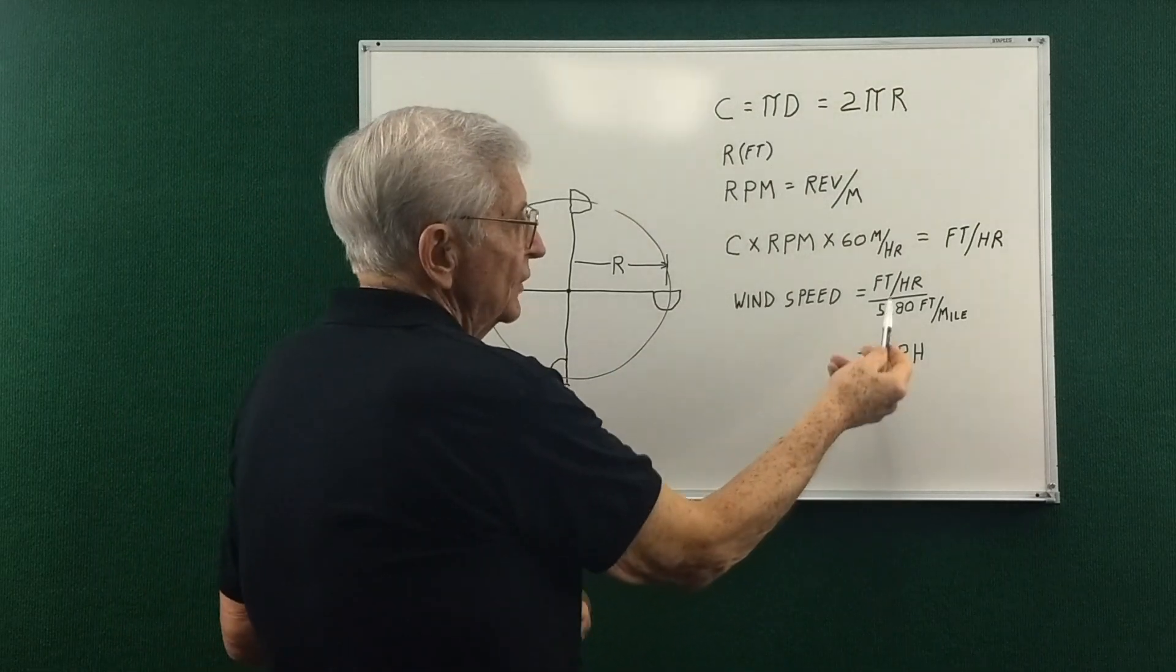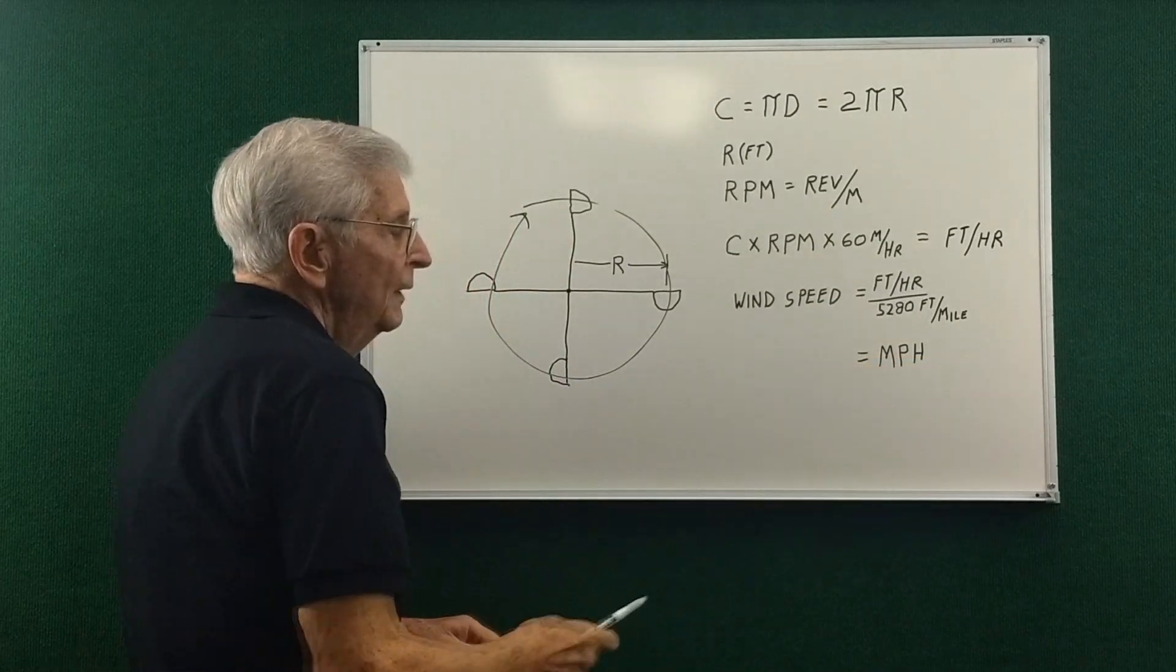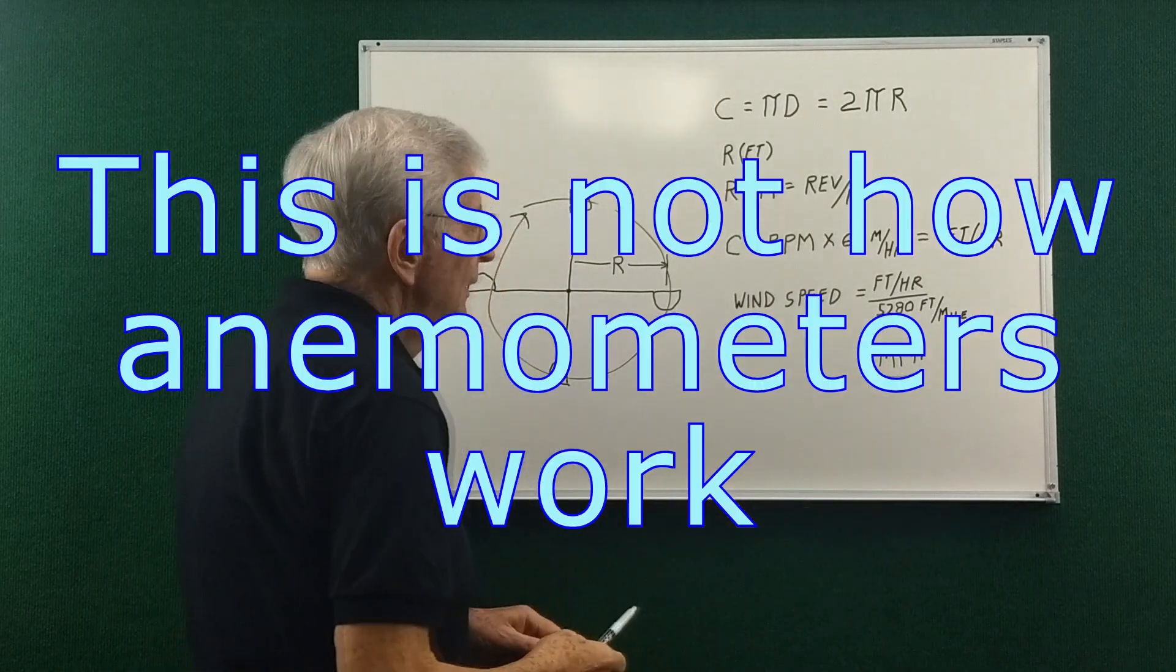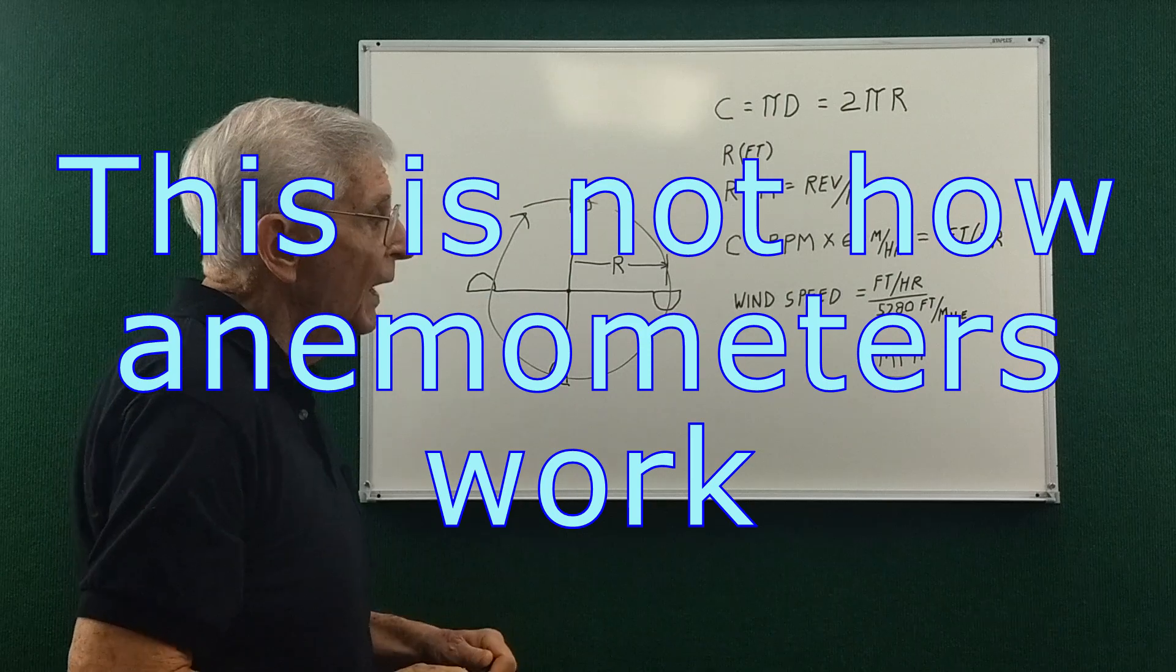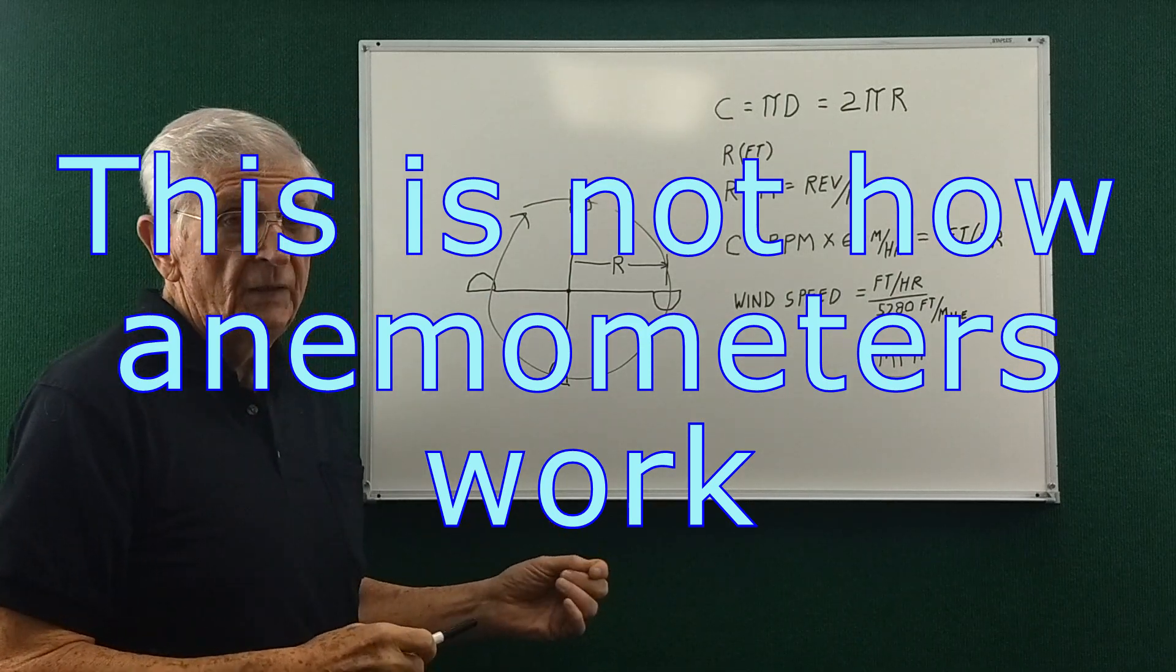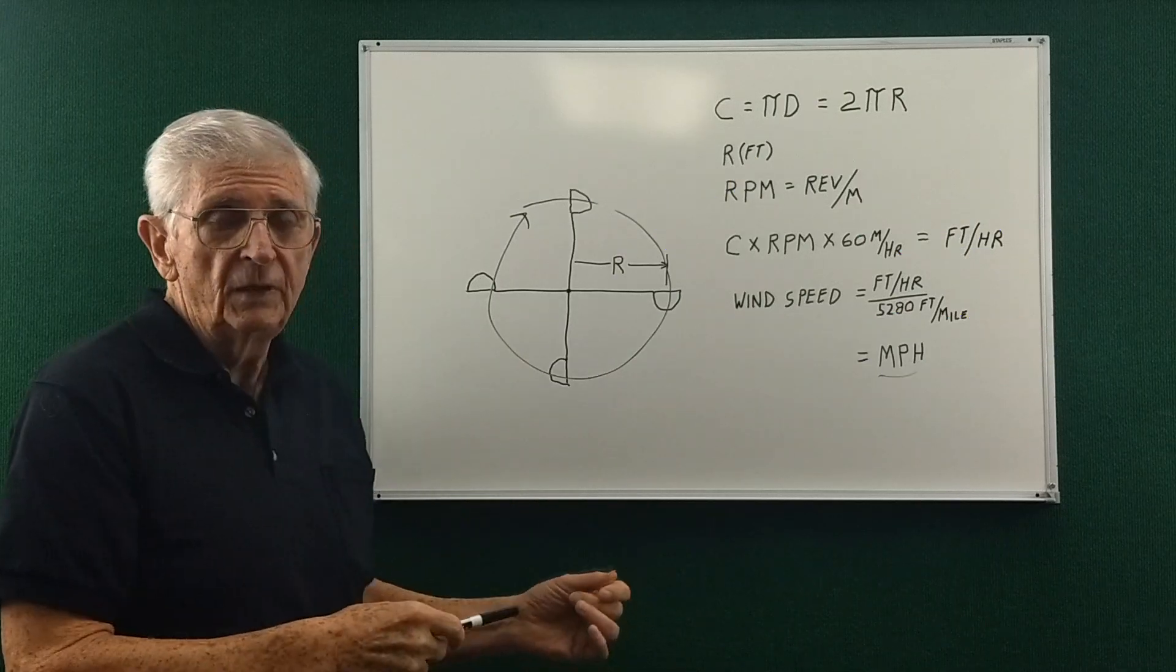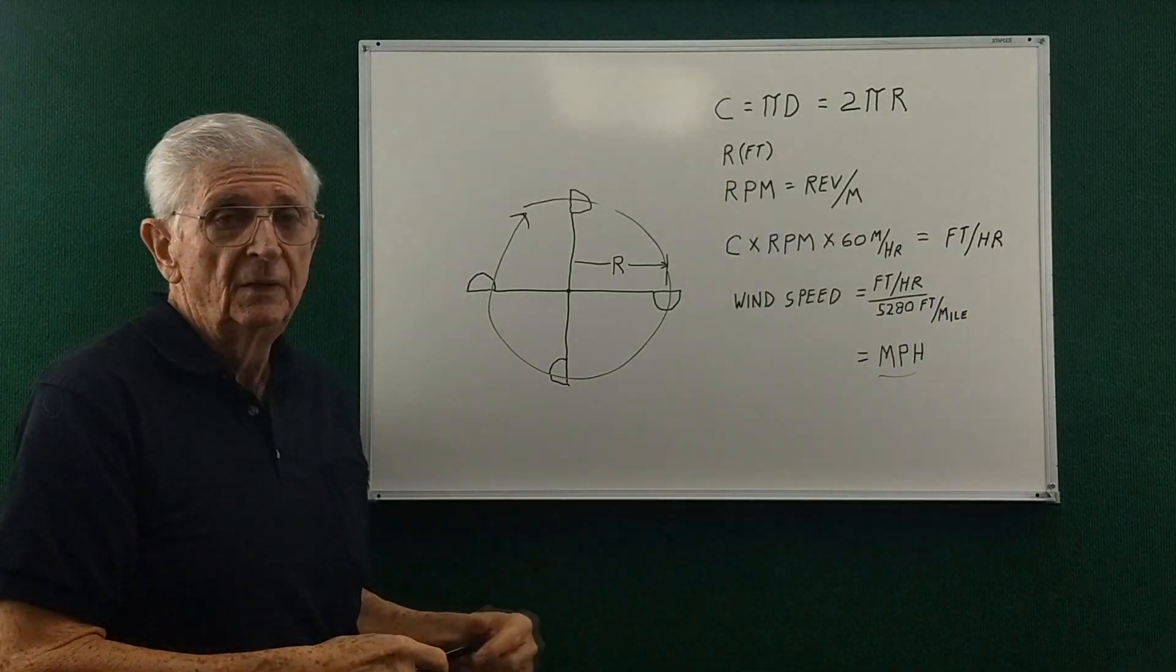And the wind speed is then just the feet per hour divided by the feet per mile and you end up with the wind speed in miles per hour. But this is totally incorrect. And let's go now to the correct interpretation of how an anemometer works.